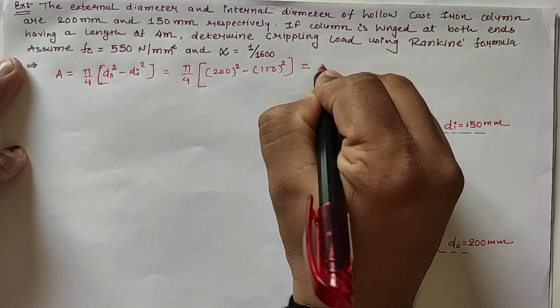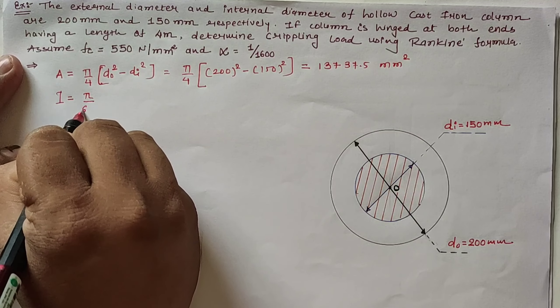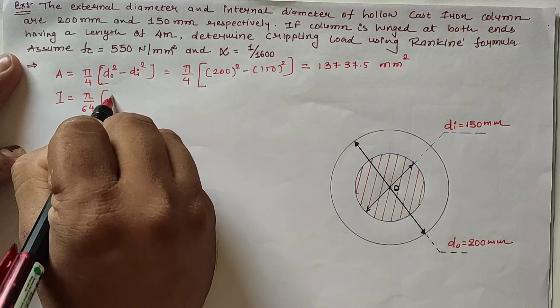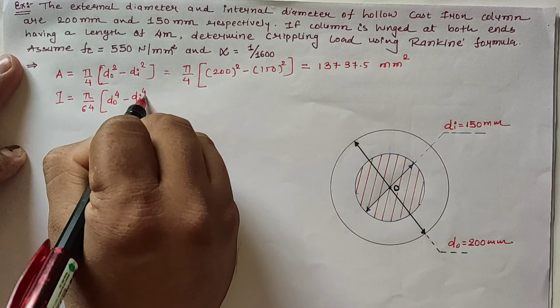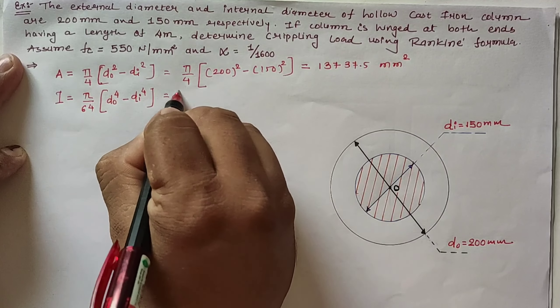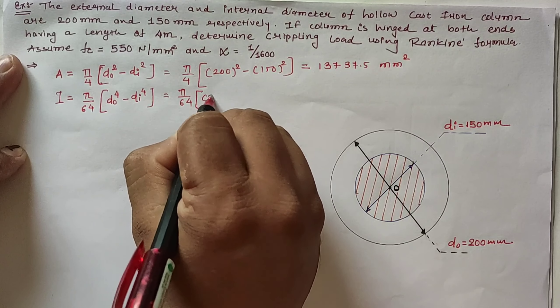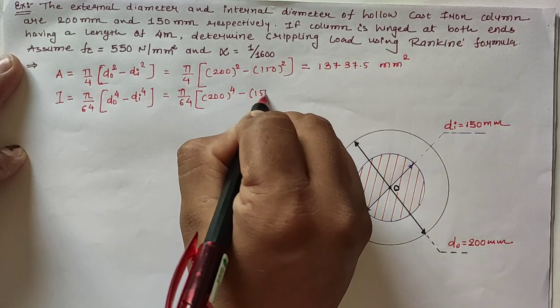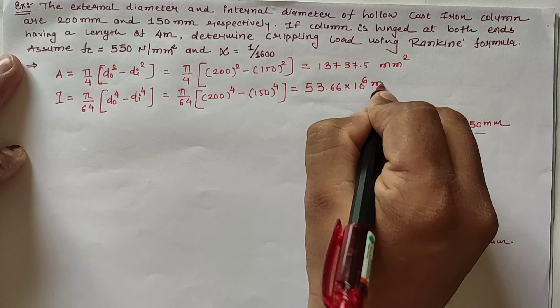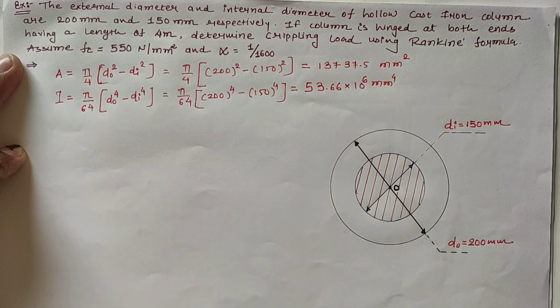For hollow circular section, the moment of inertia is π/64 (D_outer⁴ - D_inner⁴). So π/64 × (200⁴ - 150⁴), giving moment of inertia as 53.66 × 10⁶ mm⁴.